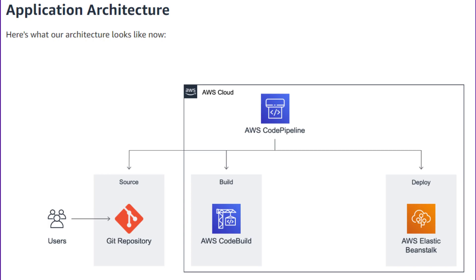Hello team and welcome back to the channel. In today's video I'll be showing you how you can build and deploy applications using AWS. The only resources we'll be using are AWS-based resources like Elastic Beanstalk, CodeBuild, and CodePipeline. The schema diagram for the same you can see on the screen — this is the process we'll be following.